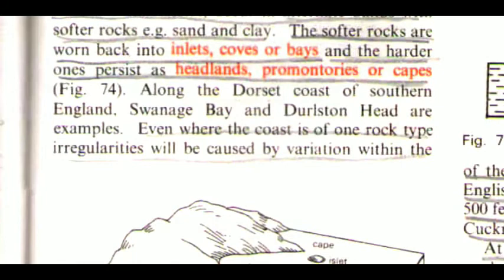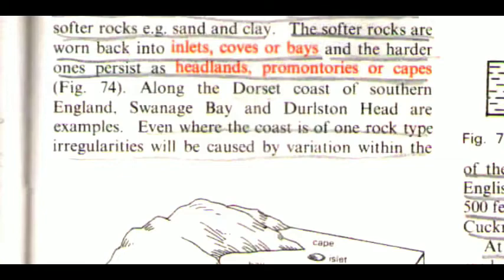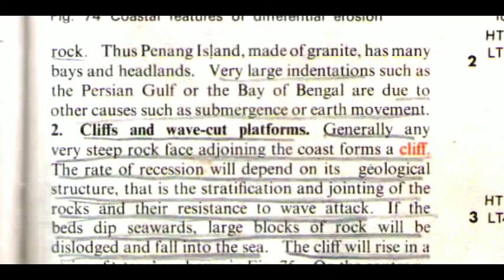Even where the coast is of one rock type, irregularities will be caused by variation within the rock. The Penang Island, made of granite, has many bays and headlands. Very large indentations such as the Persian Gulf or the Bay of Bengal are due to other causes such as submergence or earth movement.